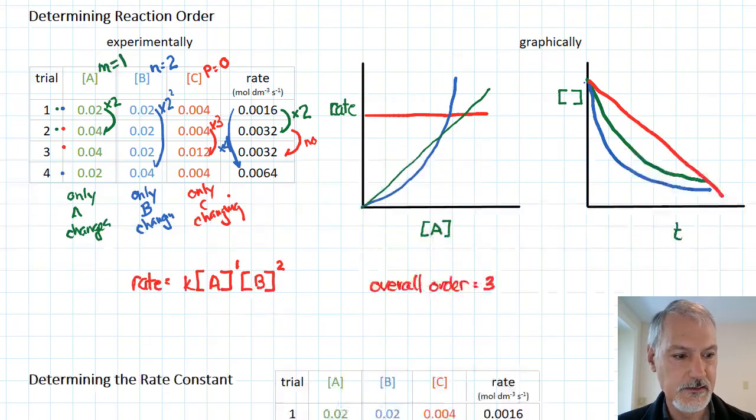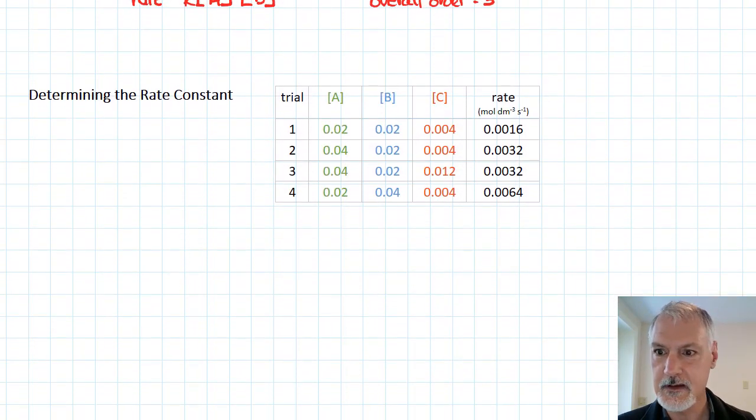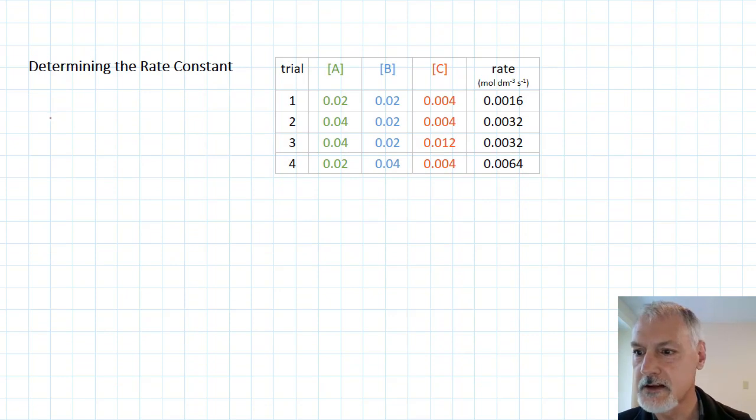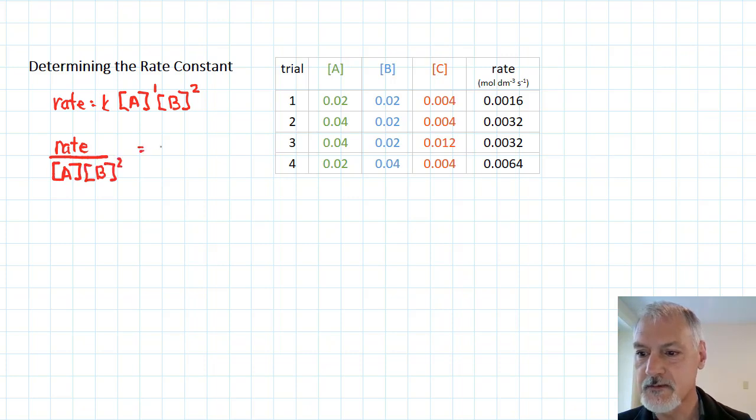Now, let's go a little bit further and try to figure out what is the value of the constant. So again, we have that the rate of this reaction is K times concentration of A times concentration of B squared. I want to isolate for K, so that suggests I can take the rate, divide it by the concentration of A times the concentration of B squared. And that will then give me the rate constant.